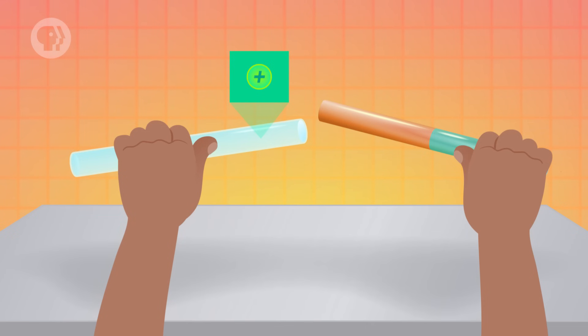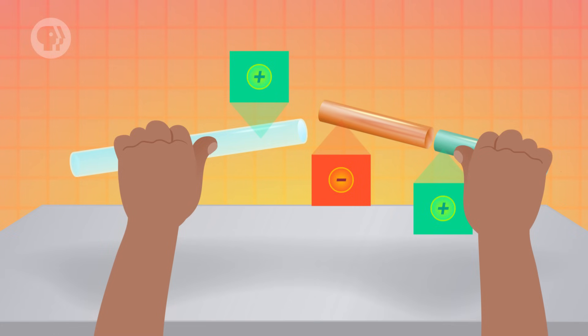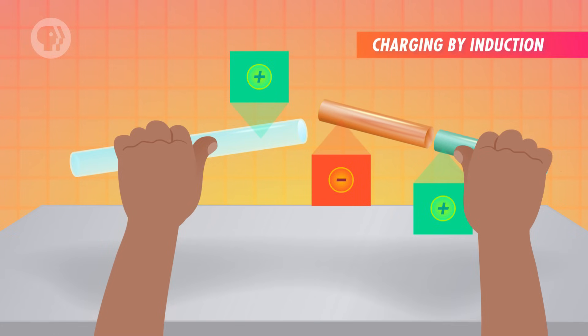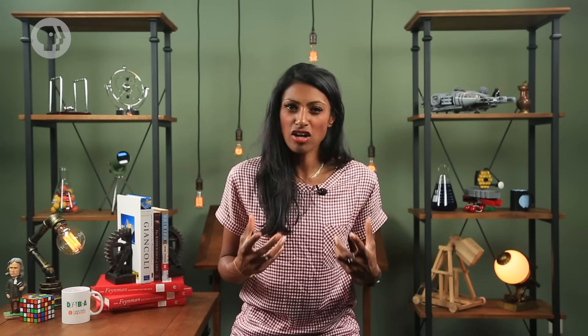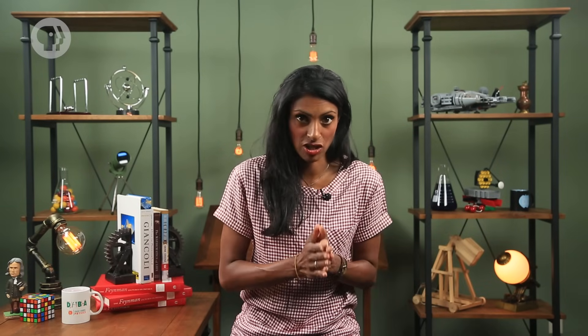Now, imagine that we slice the metal rod right down the center. It still hasn't touched the positive rod. But since we split it while an imbalance was present, we're left with one positive side and one negative side. This process is known as charging by induction – creating a net charge without contacting another object. Now, if a charged object is connected to a much larger, neutral conducting object, then the net charge gets redistributed so that the smaller object loses most of its net charge. How large an object are we talking about, exactly? Well, how about Earth?